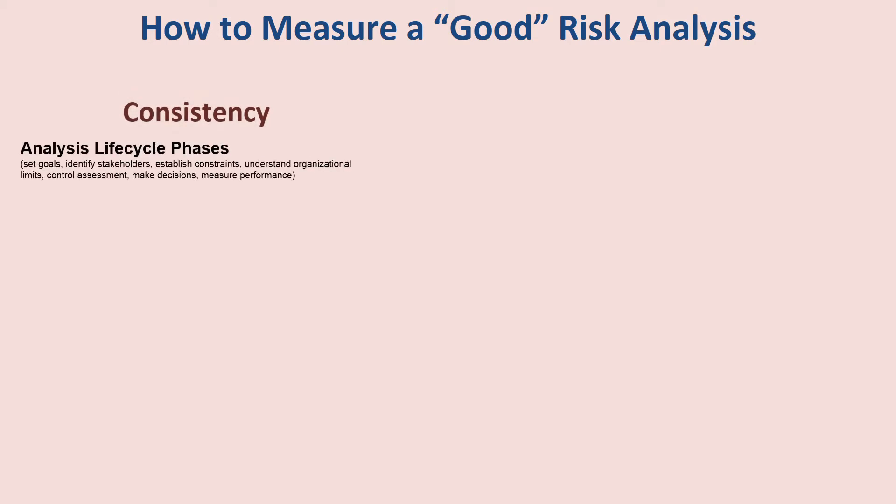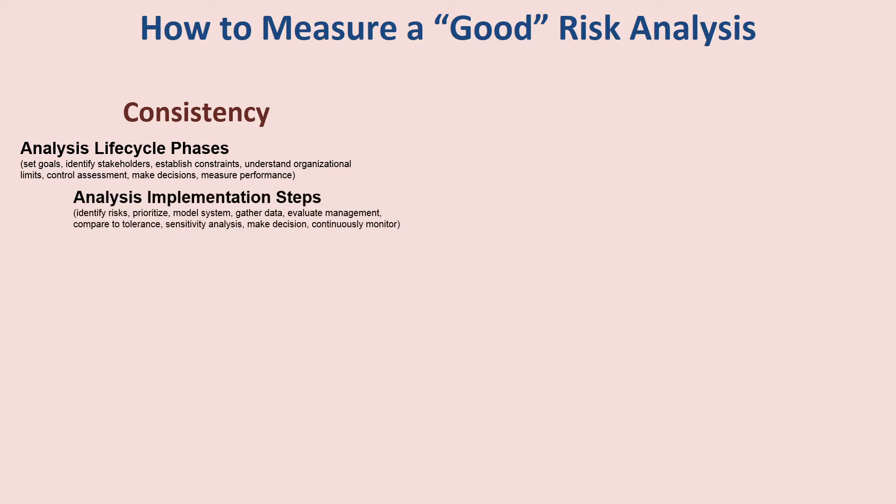The first perspective is the lifecycle phases of the risk analysis. This covers how we set goals, how we involve and identify the right stakeholders, how we understand constraints in terms of the budget for the analysis as well as organizational constraints, skills, and data. How do we actually control the analysis and assessment processes so that they are performed accurately and consistently? And how do we measure the performance as we go through this analysis? Another perspective is the actual implementation steps.